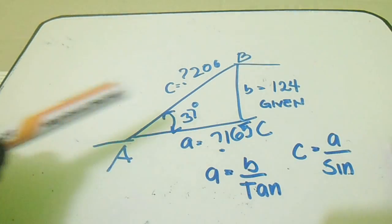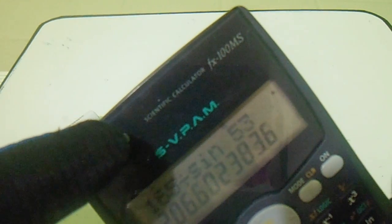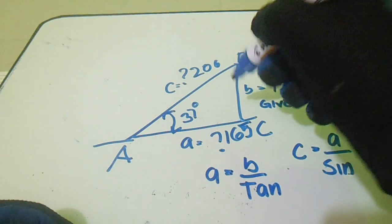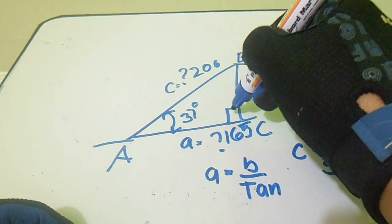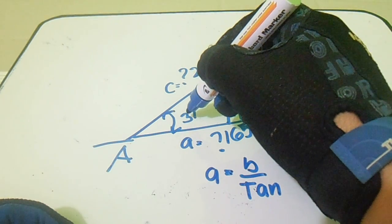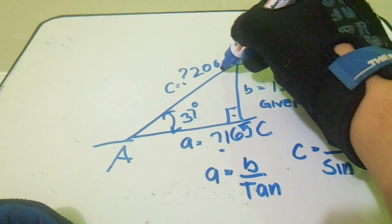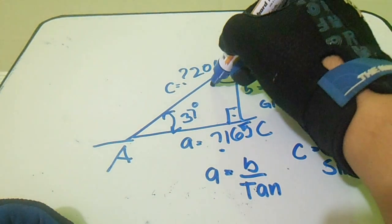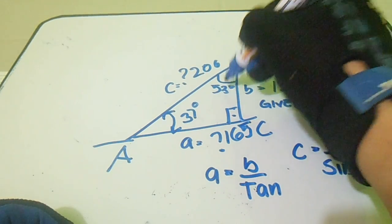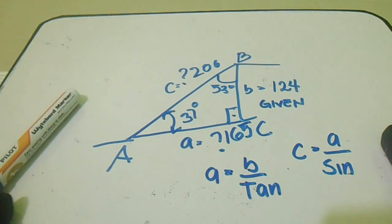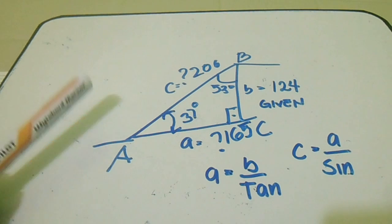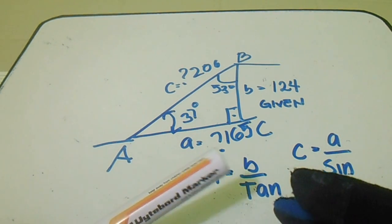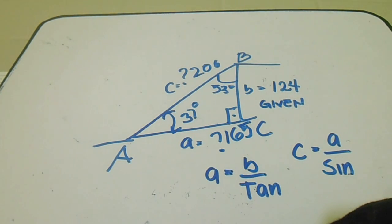The question is: where do we get 53 degrees? This is very easy — we have 90 degrees and just subtract 37 degrees, which gives us 53 degrees.